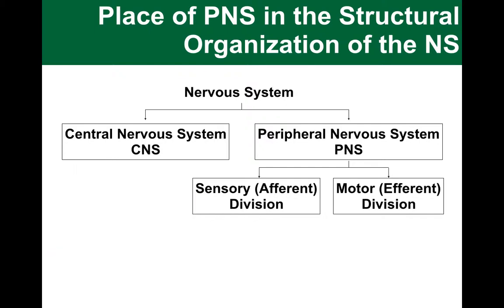These give us the names afferent for the sensory part of the peripheral nervous system and efferent for the motor part of the PNS. These terms tell us which way around the message is going.